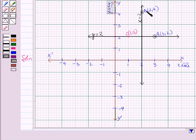And the reflection of B in the line y=2 is D whose coordinates are (2,0).